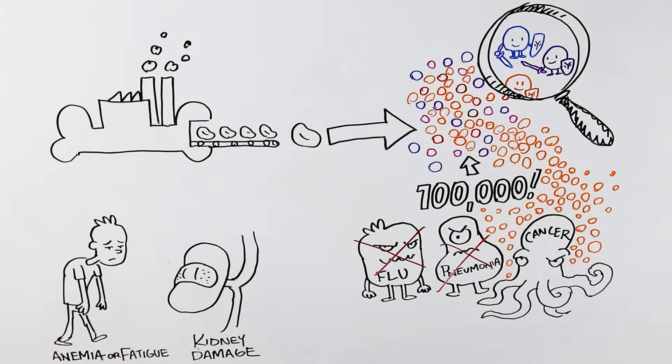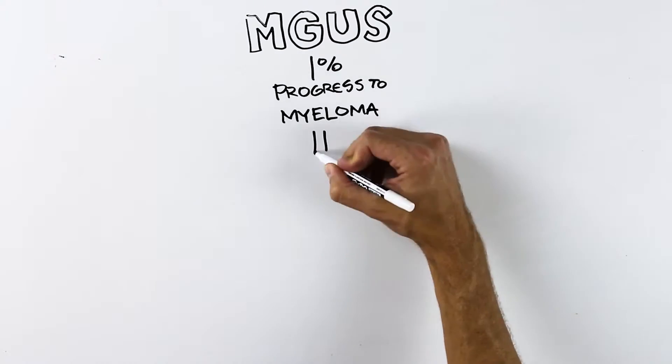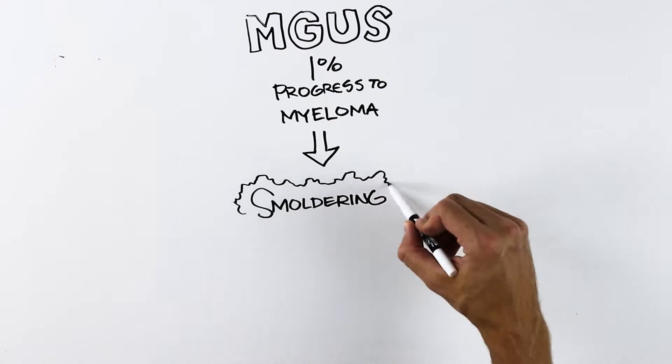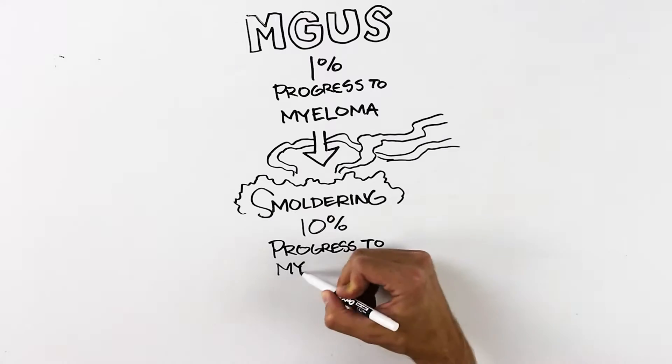Today, the cause of multiple myeloma is unknown. People can have precursor stages of multiple myeloma and not even know it. Patients can start with a condition called MGUS or smoldering myeloma. These are early stages of the disease.